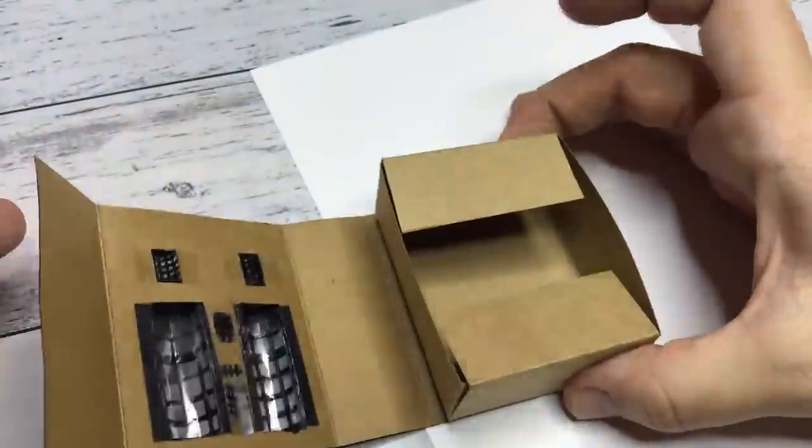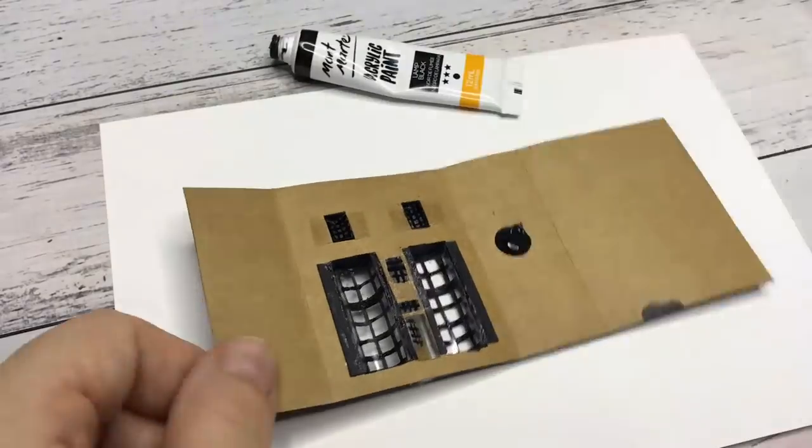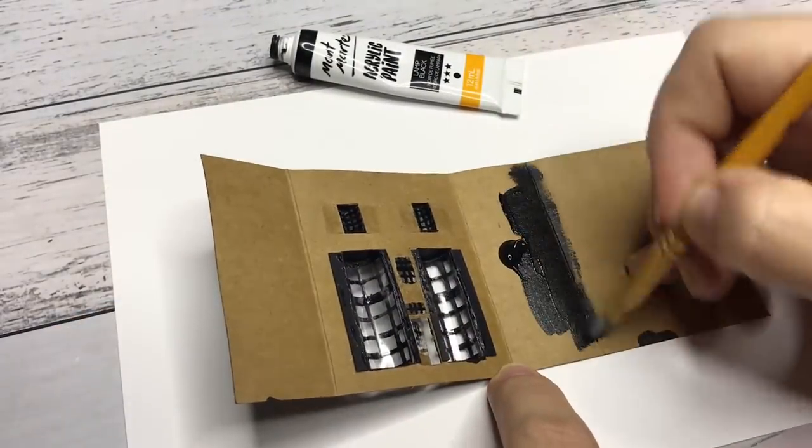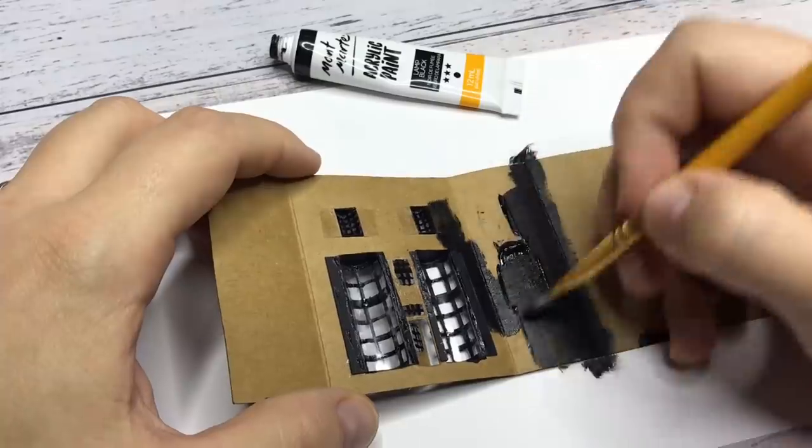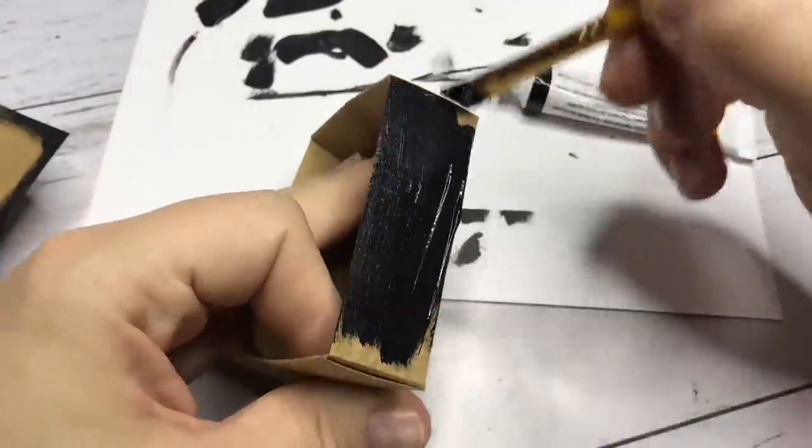I decided I want the matchbox to open like a book. It's still a matchbox but of course you can modify it in whatever way you want. I cut off the glue strip and paint the inside of the cover and the sides of the inside box black.